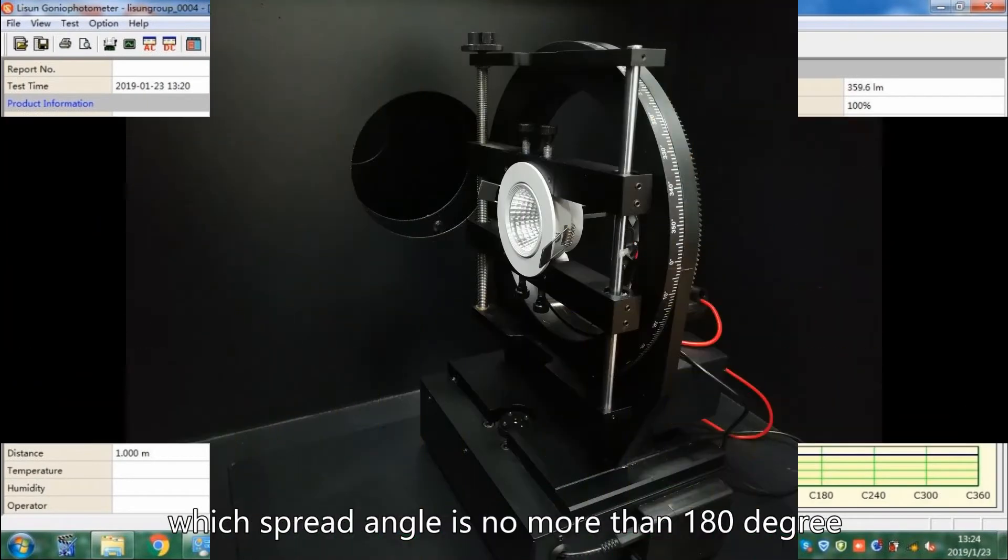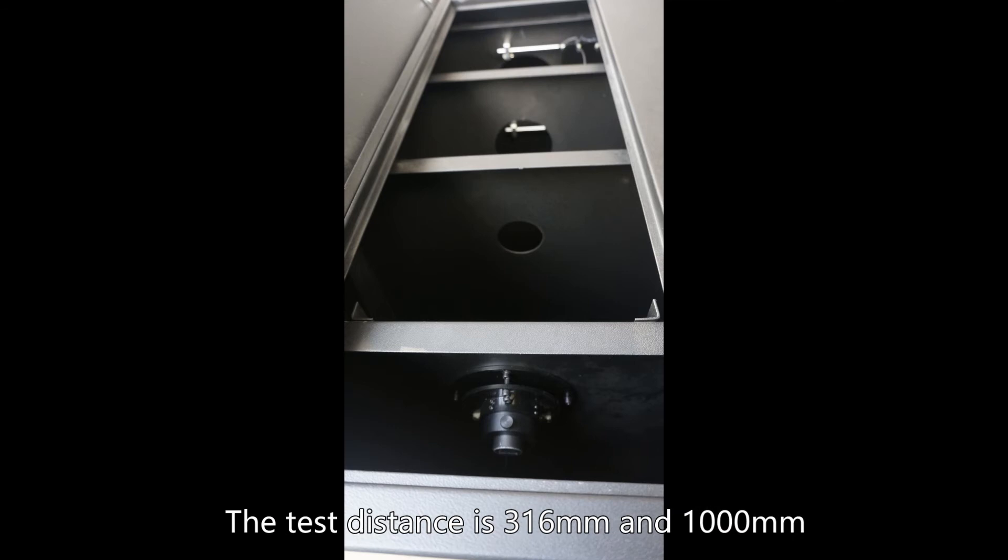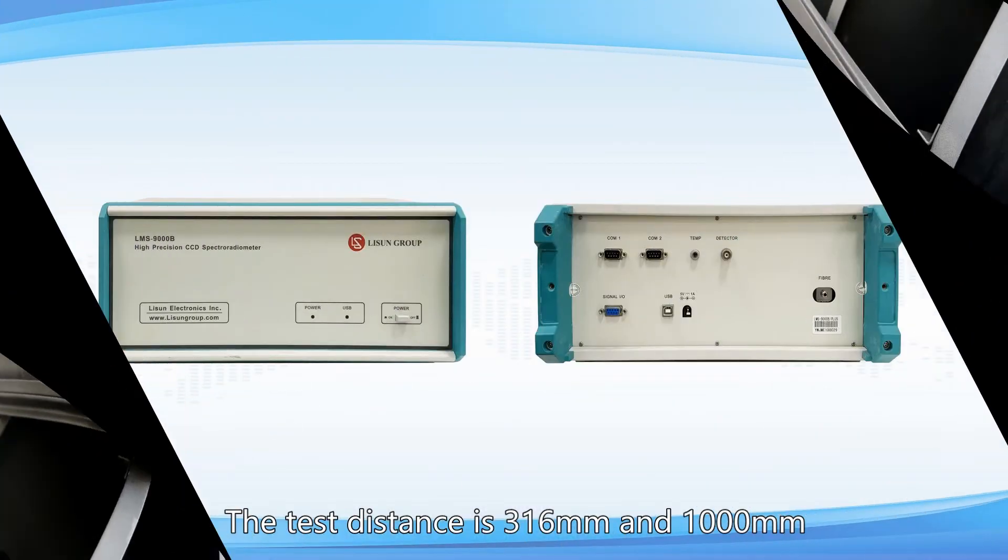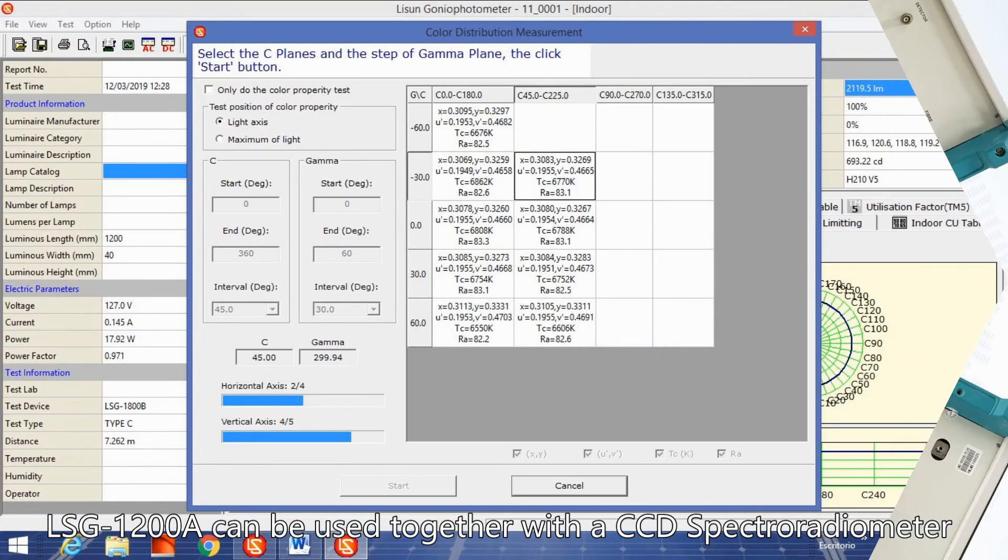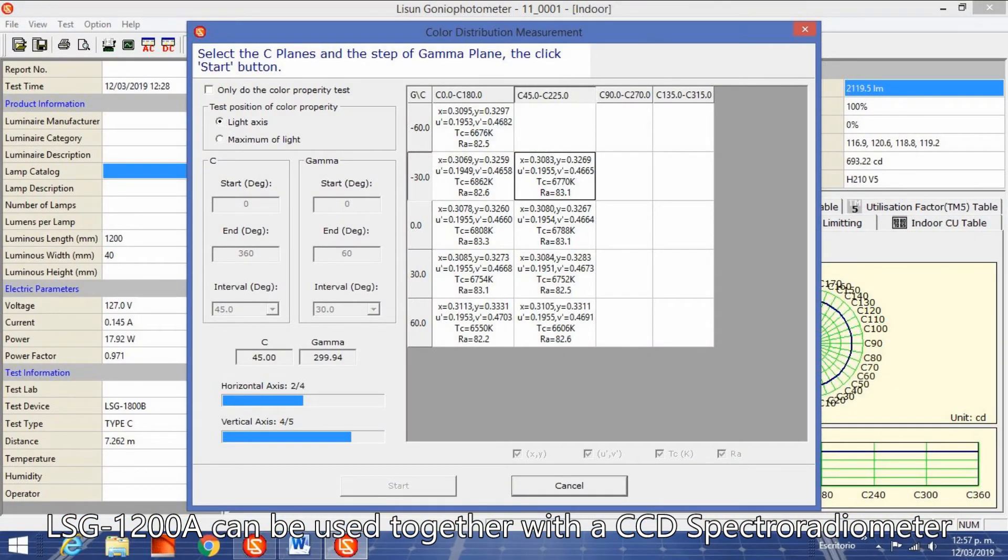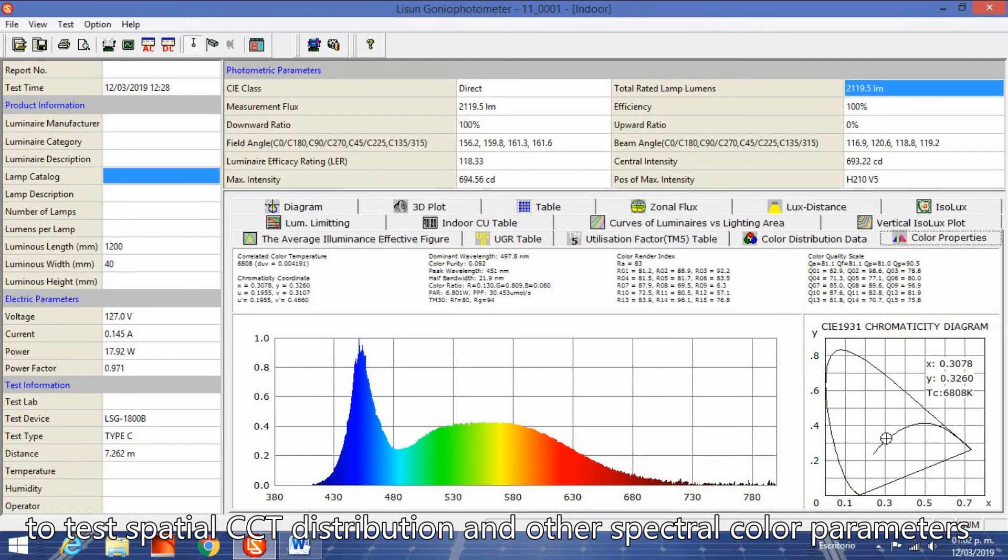Maximum size of sample under test is 180 millimeters. The test distance is 316 millimeters and 1000 millimeters. LSG-1200A can be used together with a CCD spectroradiometer to test spatial CCT distribution and other spectral color parameters.